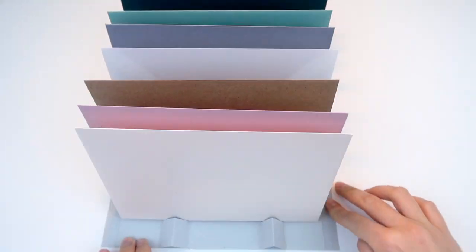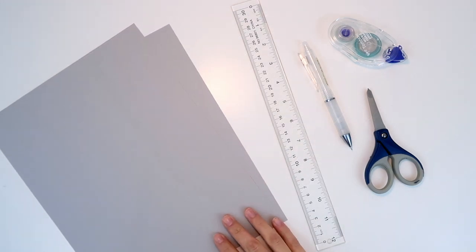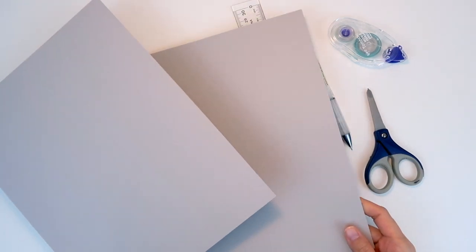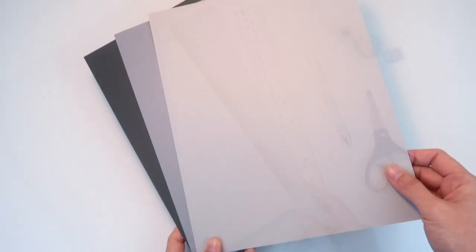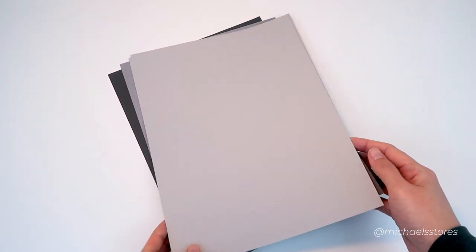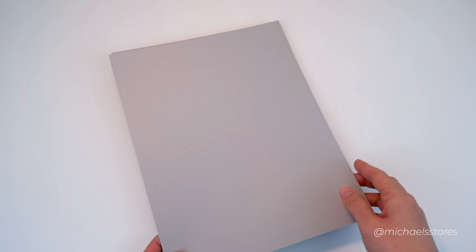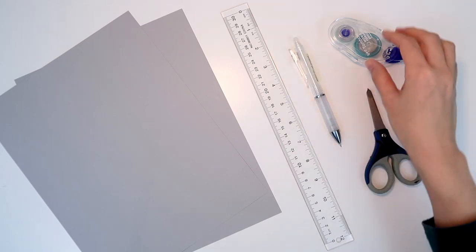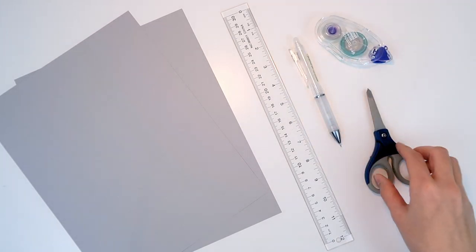To make this paper drying rack, you will need two thick 8.5 by 11 sized papers. Here I am using color card stocks that I purchased from Michaels. It can be any color, but I have chosen a simple grey so that it doesn't stand out too much when I later take photos of the final envelopes. We need a ruler, pencil, tape, and a scissor.